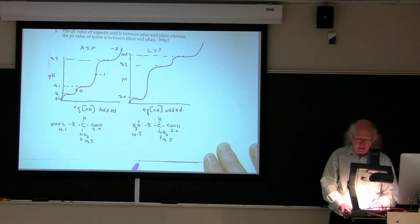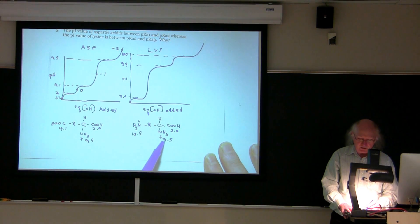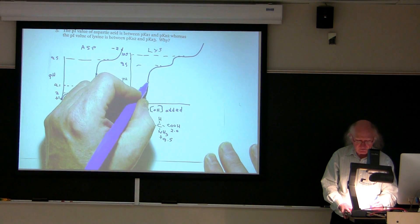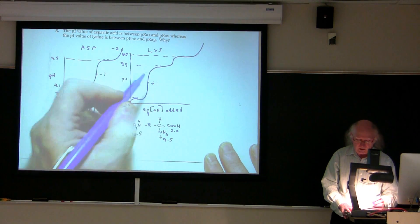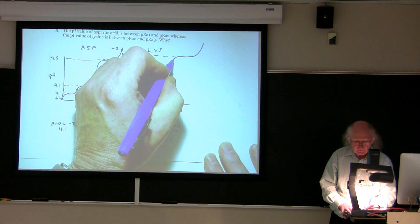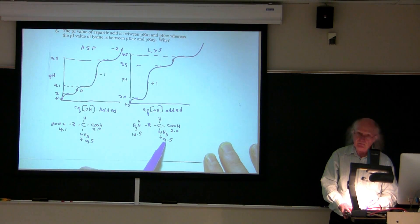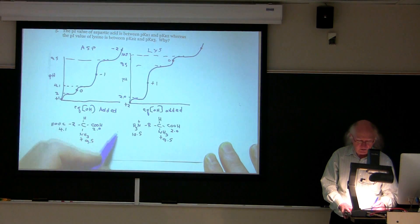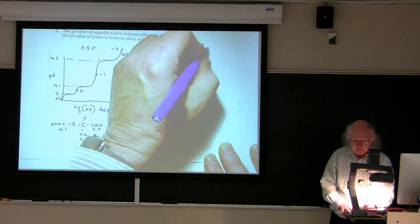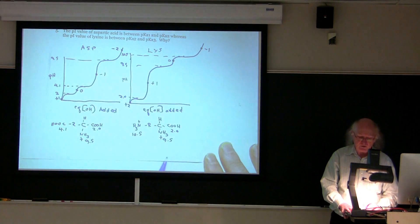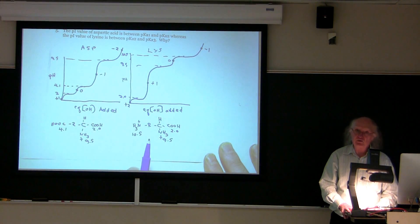For lysine with all protons on — a proton on the carboxyl, alpha amine, and R group amine — the charge is plus two. Losing the first proton at pH 2 gives a charge of plus one (COO-minus, NH3+, and R-NH3+). Losing the next proton at pH 9.5 corresponding to the alpha amine gives a charge of zero. Finally, losing the last proton gives a charge of minus one. Note that the close spacing here is just for illustration purposes.